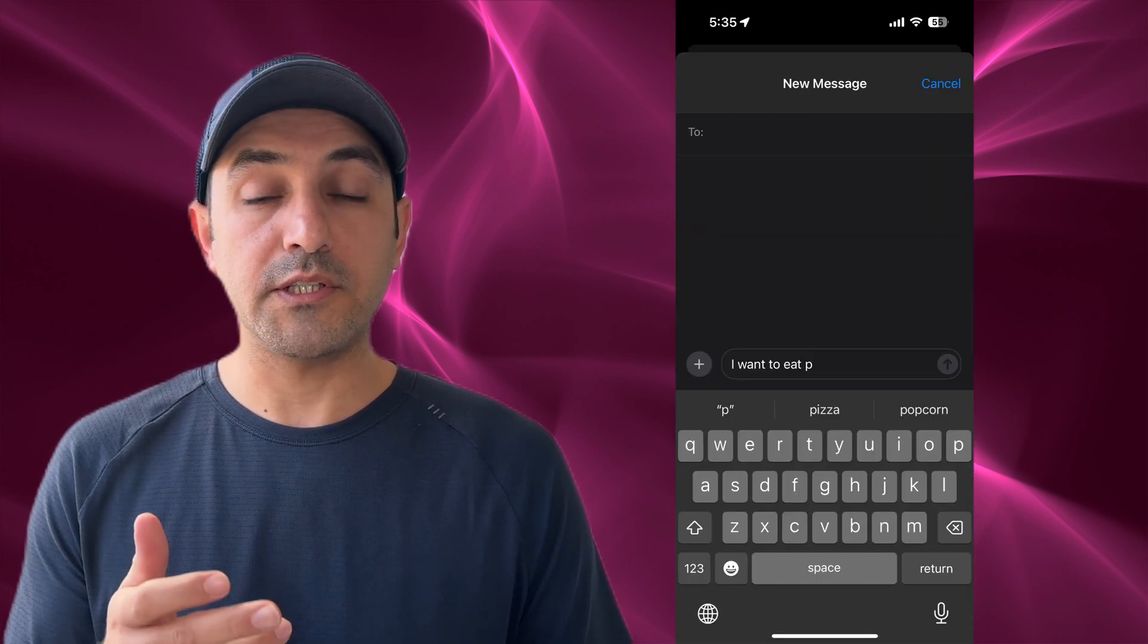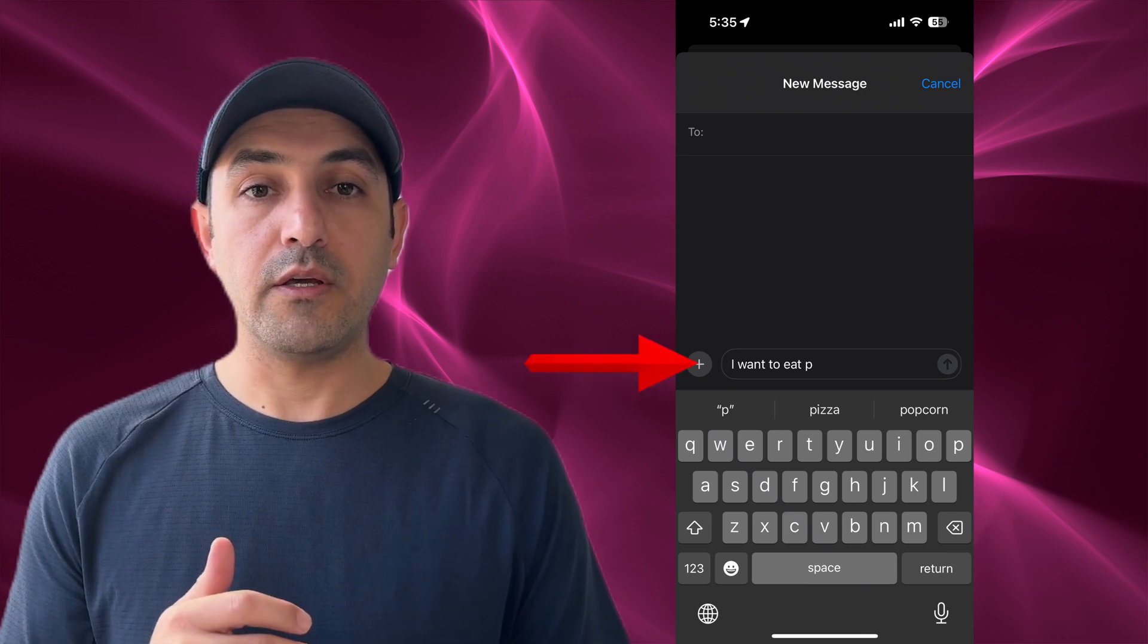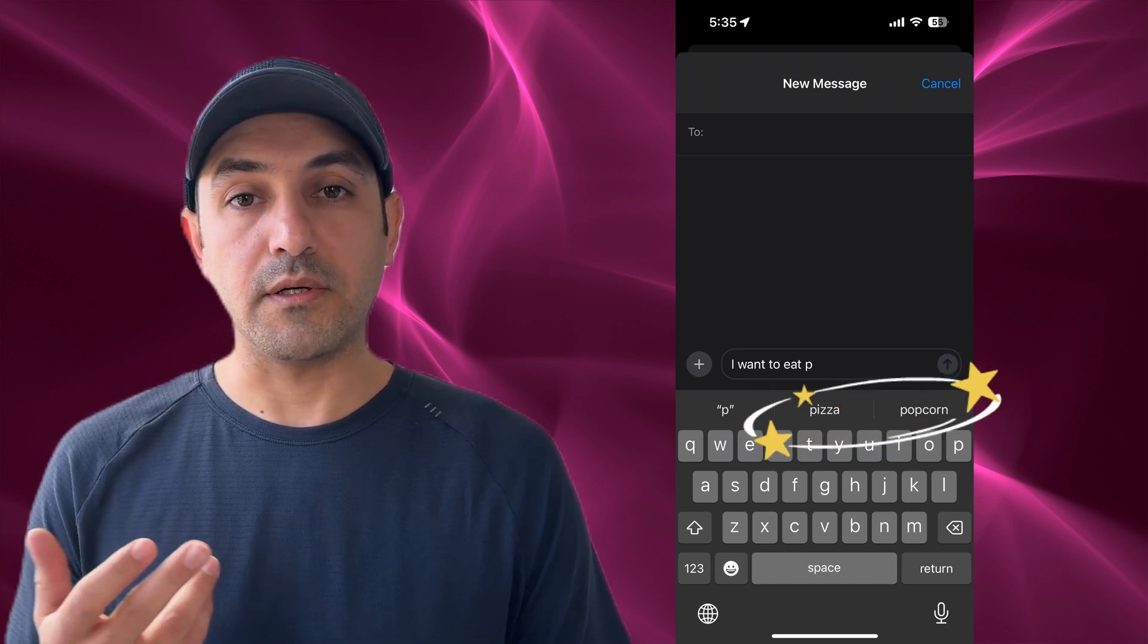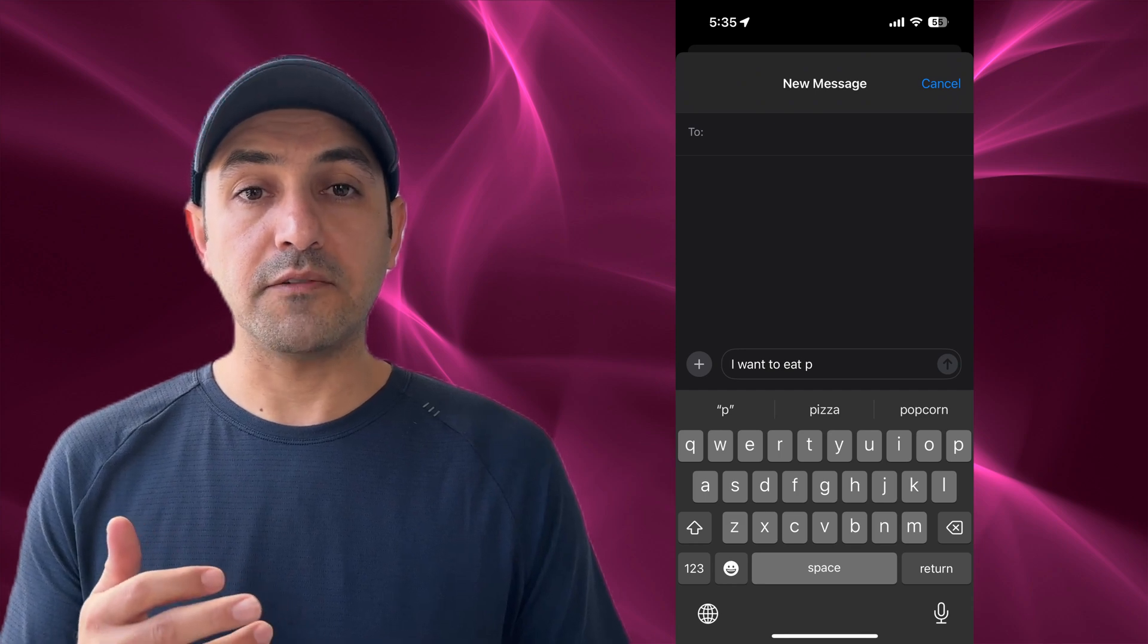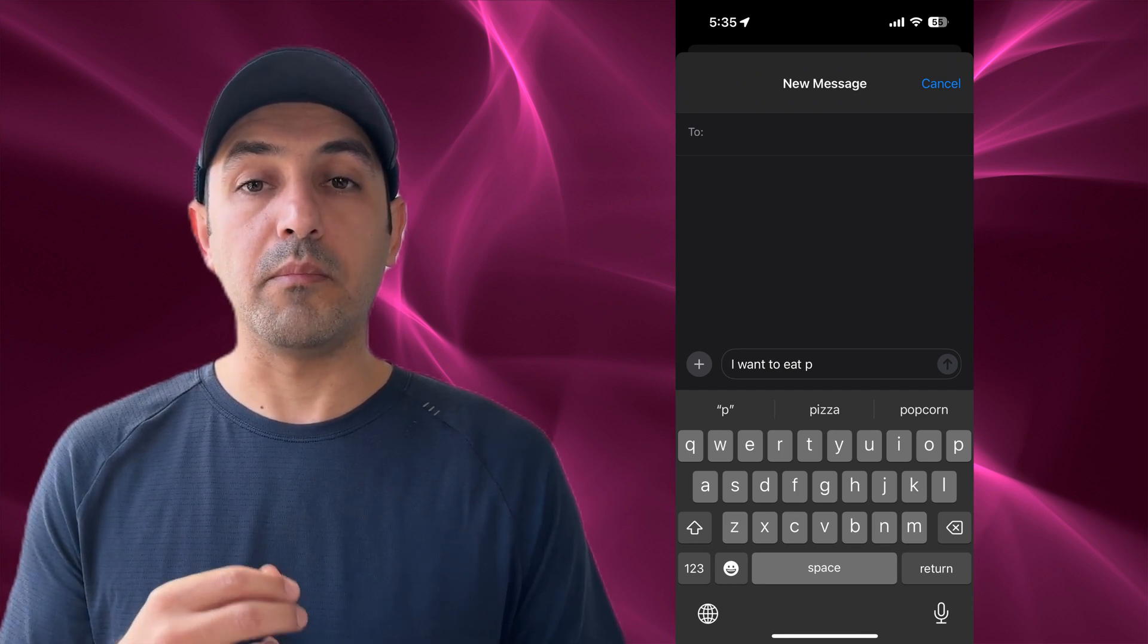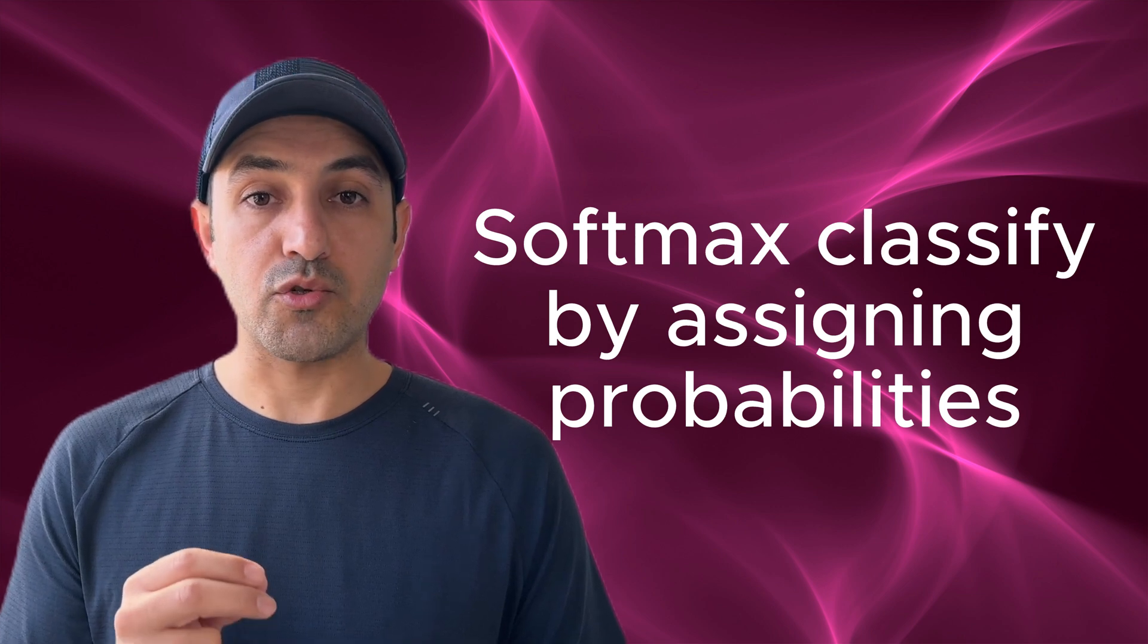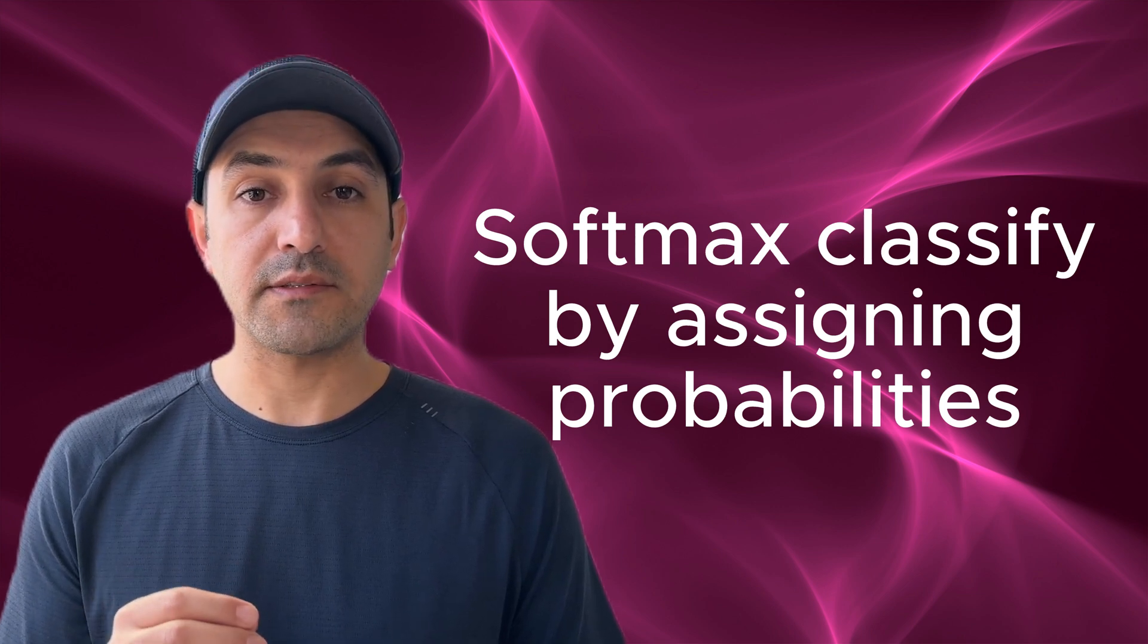I already mentioned the cat, dog, and bird example. Now let's think about another example. Imagine your phone's keyboard suggesting words as you type. If you write 'I want to eat,' your phone might guess the next word could be pizza, pasta, or salad. Softmax helps the phone figure out the most likely word from many options. Another example is email spam detection - your email provider needs to decide whether a new message is spam, promotional, or a personal email. Using softmax, the algorithm calculates probabilities for each category and chooses the one with the highest chance.